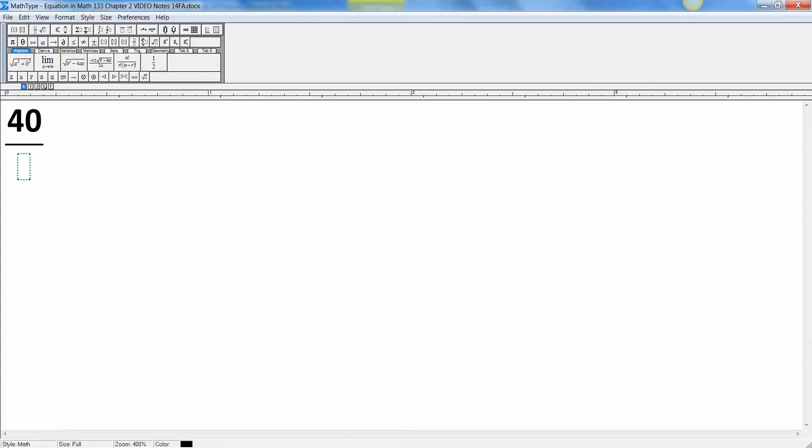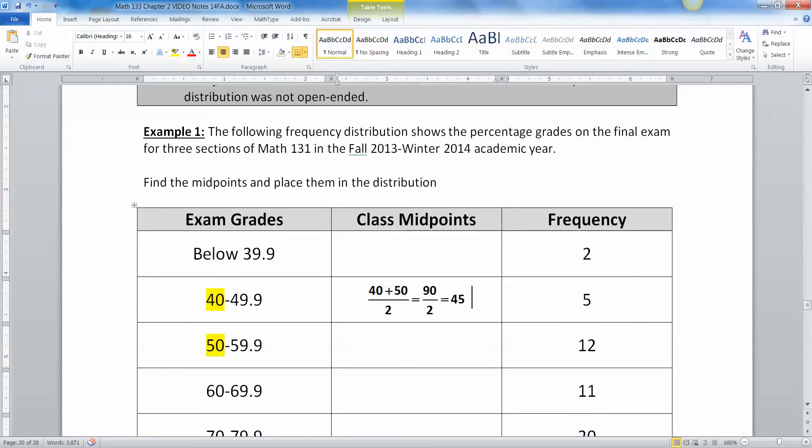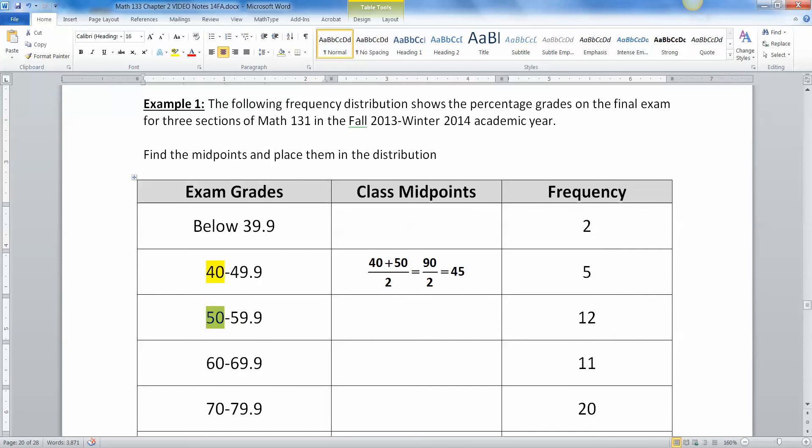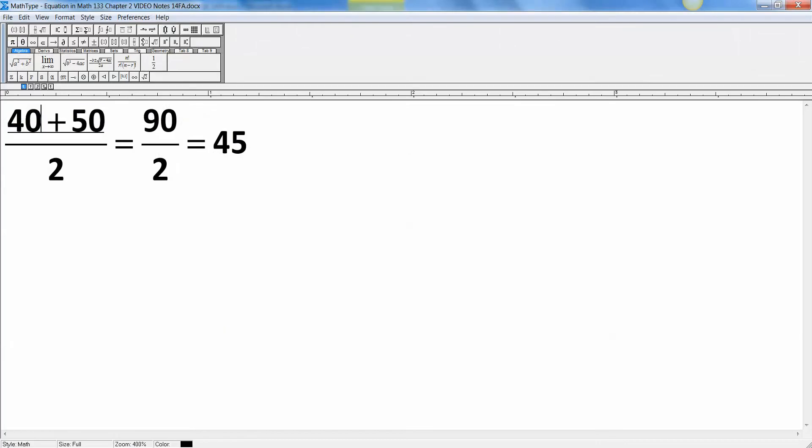So 40 plus 50 divided by 2, which is 90 over 2, which is 45. All right, so then the next one would be 50 and 60. You add those two up and divide by 2. So 50 plus 60, which would make 110, which would make 55.